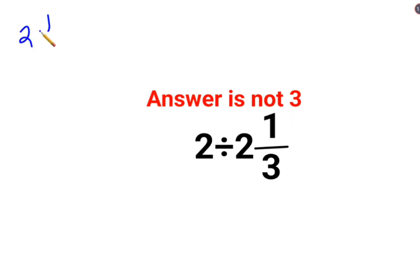What we do with a mixed fraction is that you will convert it into an improper fraction. The denominator remains the same and in the numerator, the integer part gets multiplied by 3 plus 1. So the answer for this one is 7 upon 3.